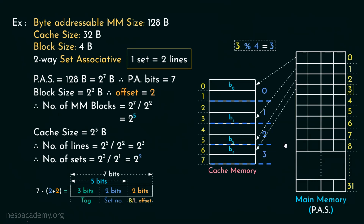Now things become more interesting. For main memory block number 4, it maps to 4 mod 4, which is set number 0. Unlike direct memory mapping, we do have a choice for block number 4 — line number 1 is still available. So main memory block number 4 will be placed into line number 1. That's the beauty of set associative mapping.